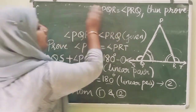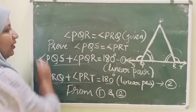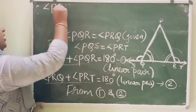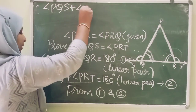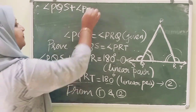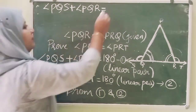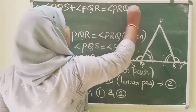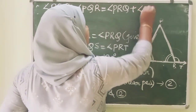So angle PQS plus angle PQR is equal to angle PRQ plus angle PRT.